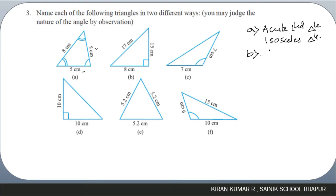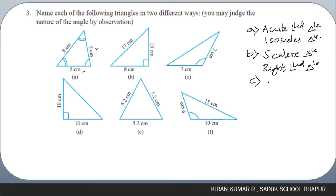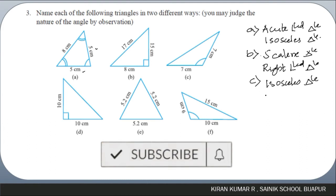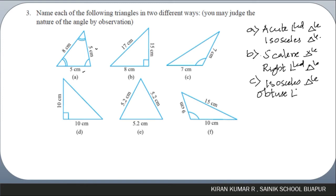For the second figure, all three sides are different so it forms a scalene triangle. One angle is 90 degrees, so it is also a right-angled triangle. For the third figure, two sides are equal so it is an isosceles triangle, and one angle is larger than 90 degrees so it is also an obtuse-angled triangle.